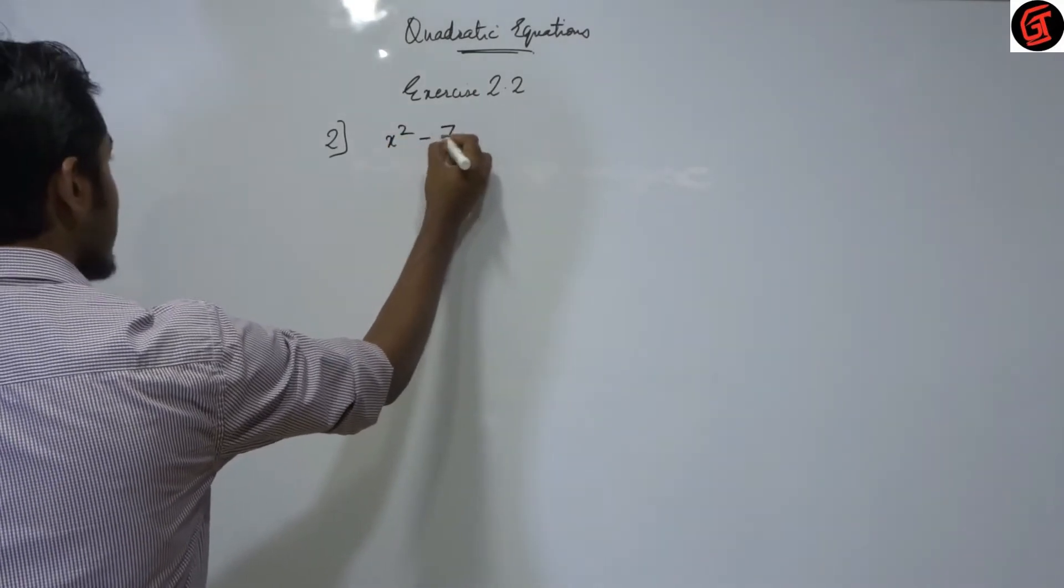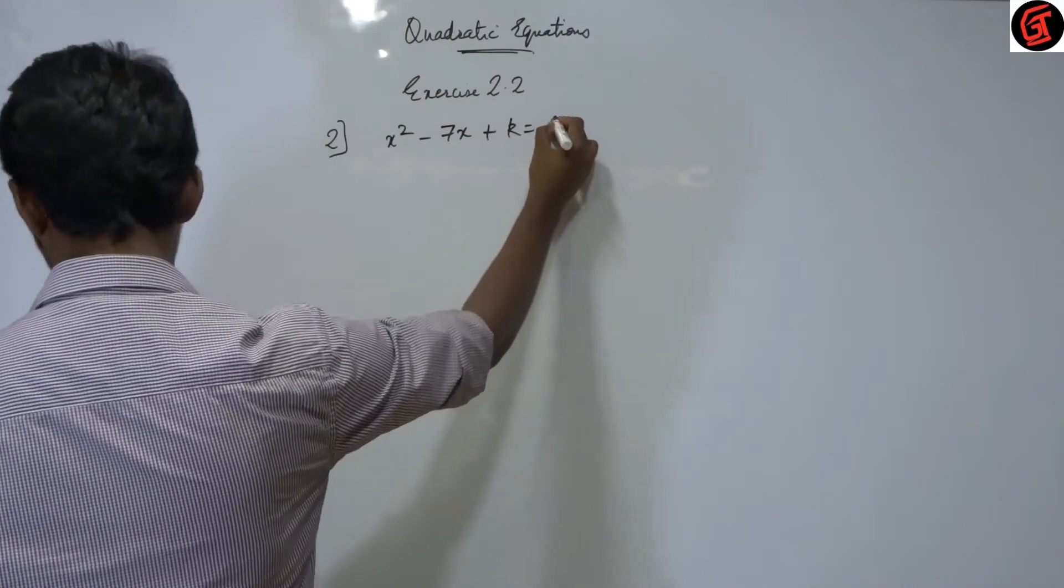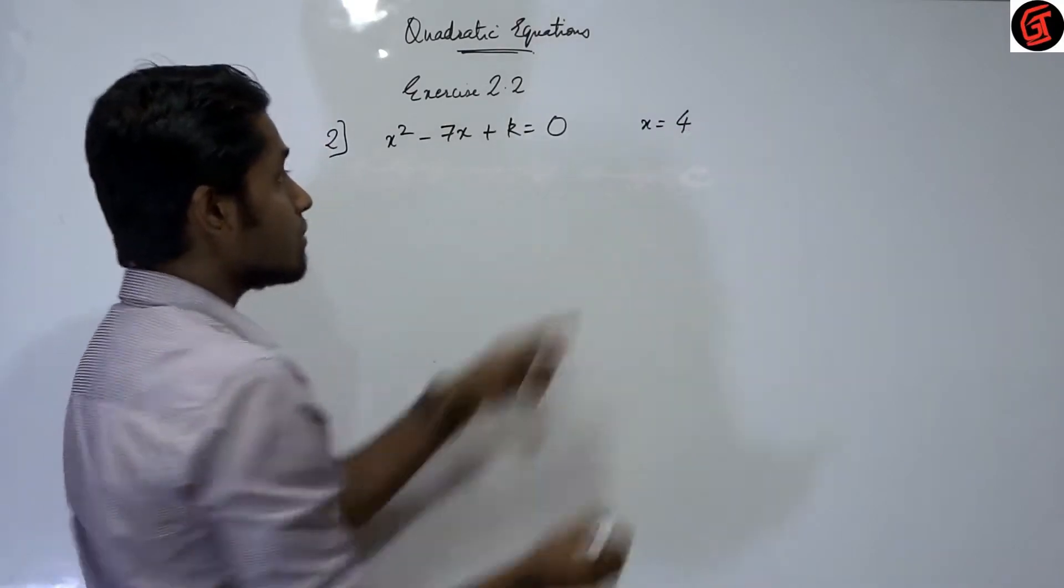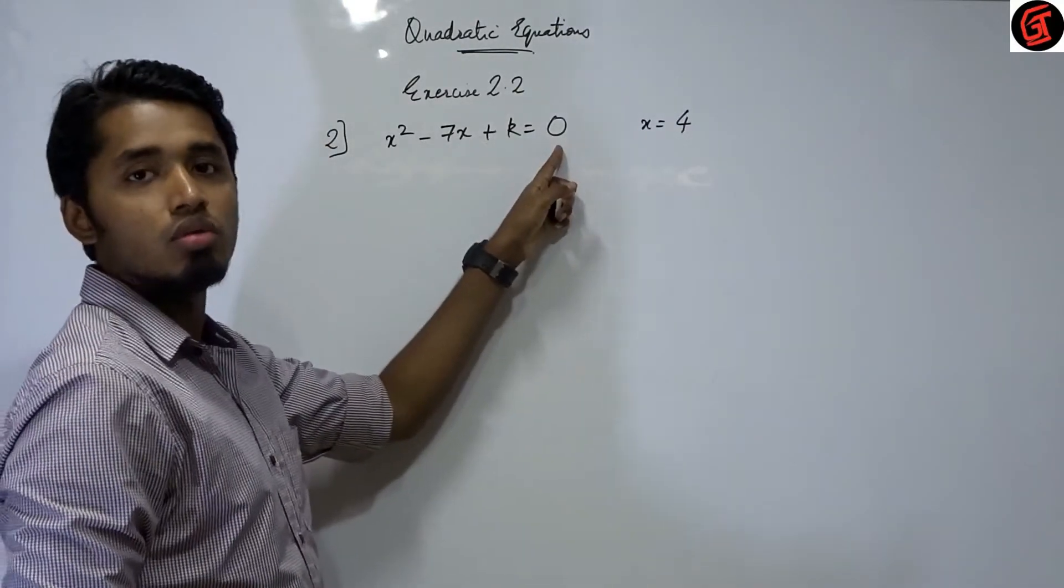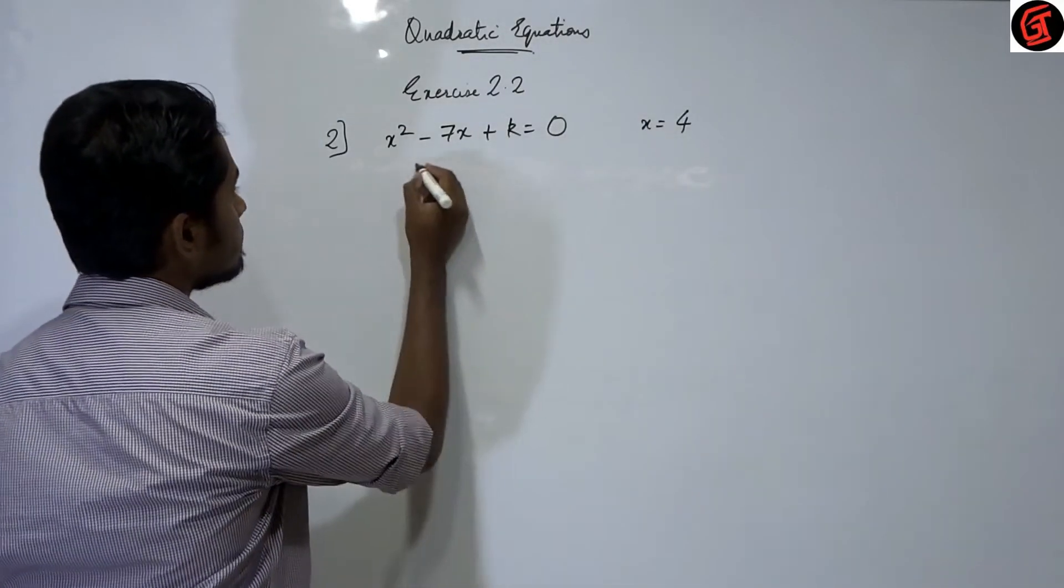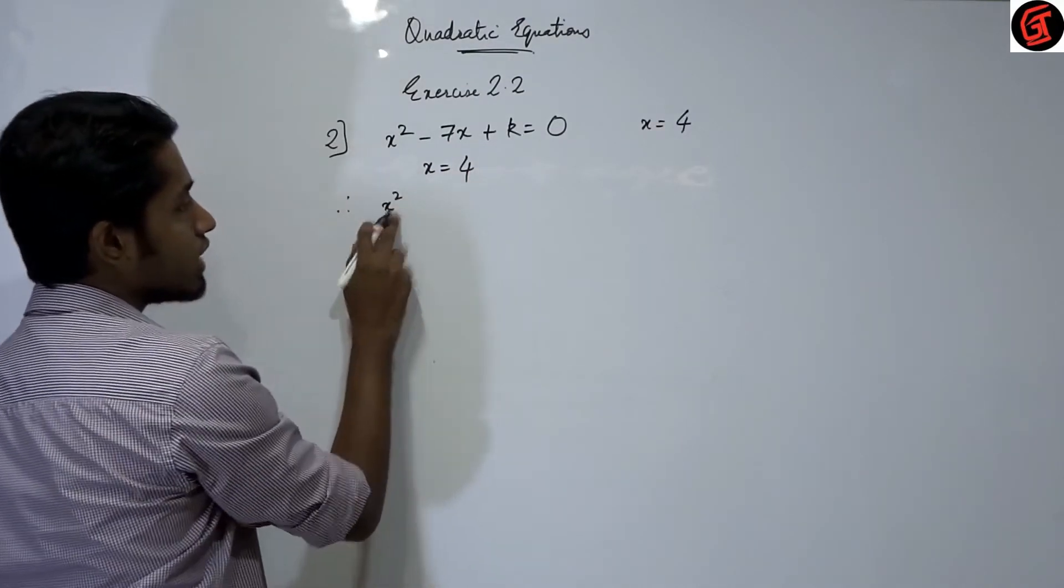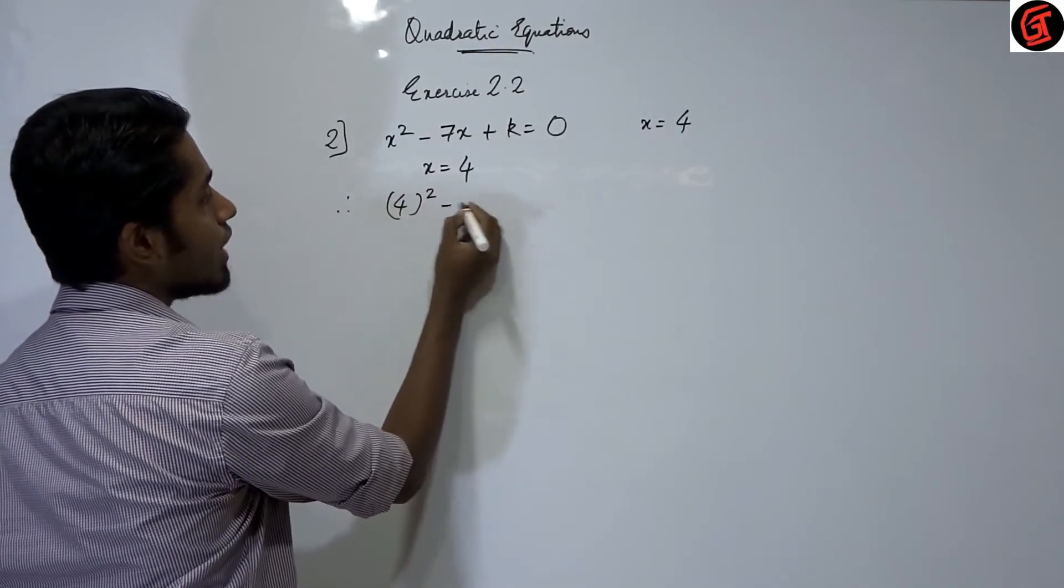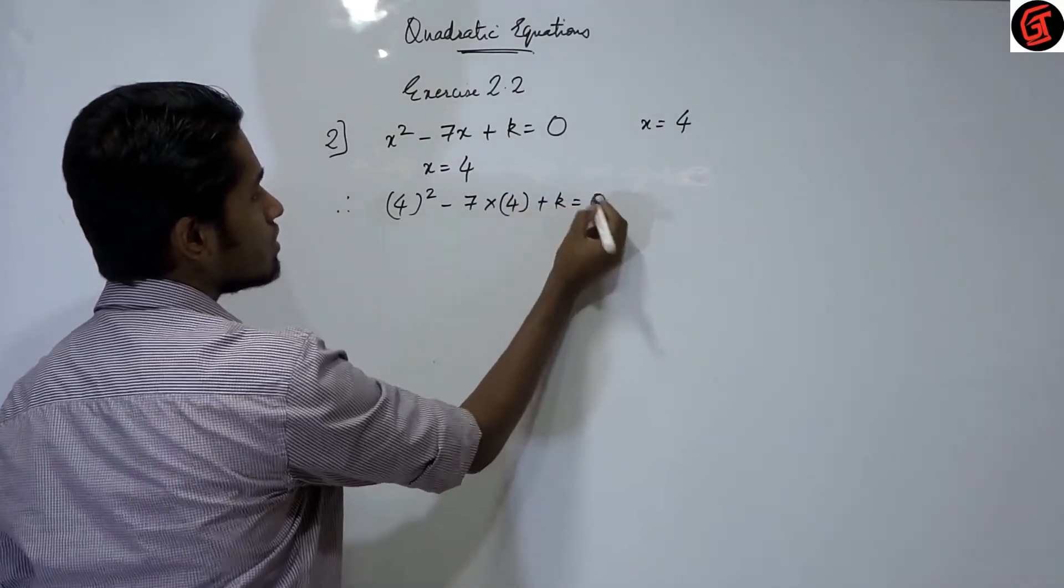What is the question? x square minus 7x plus k is equal to 0. Now when is it equal to 0? When x is equal to 4. That means when you put 4 in place of x, you are getting equal to 0. So we have to just find the value of k. So simple is substitute. x is equal to 4. Therefore x square, this x square becomes what? 4 square minus 7 into 4 plus k is equal to 0.